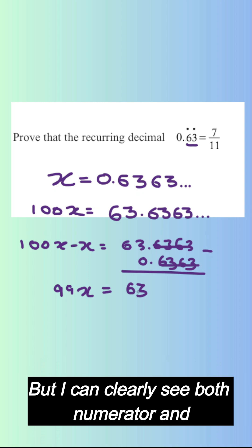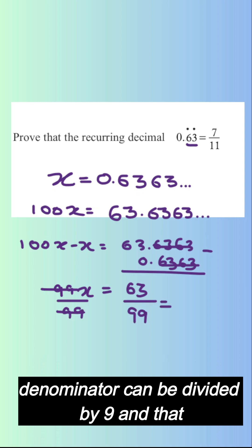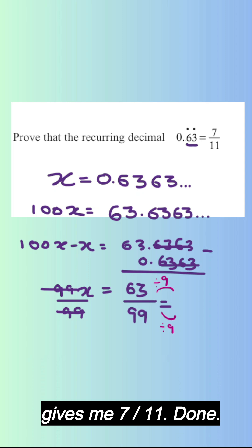But I can clearly see both numerator and denominator can be divided by 9 and that gives me 7 over 11. Done.